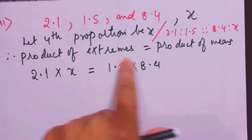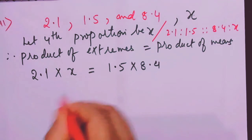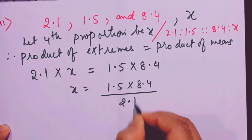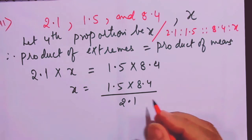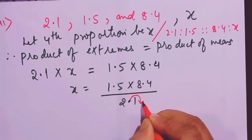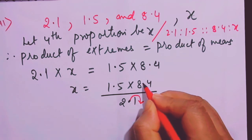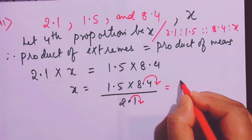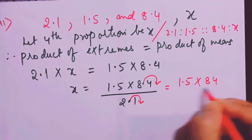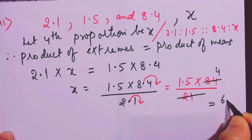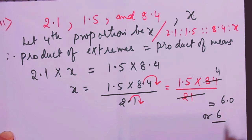Only after writing product of extremes equals product of means do we proceed. X equals 1.5 into 8.4 divided by 2.1. To avoid decimals in the denominator, shift the decimal one place right in both numerator and denominator: giving 1.5 into 84 divided by 21. This cancels beautifully — 21 goes 4 times into 84 — so 1.5 into 4 equals 6.